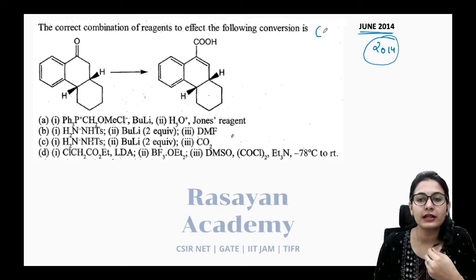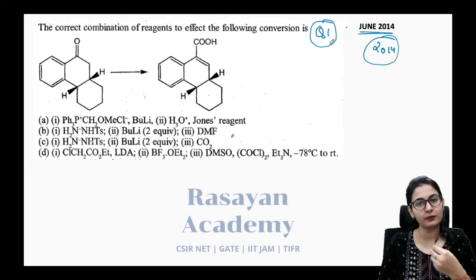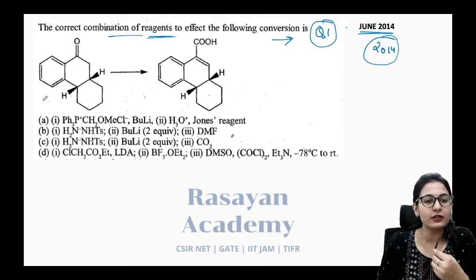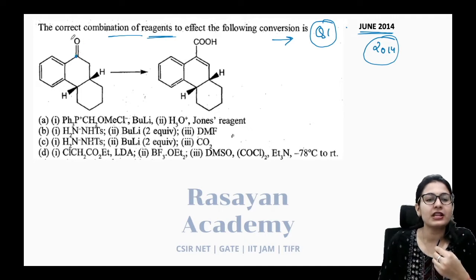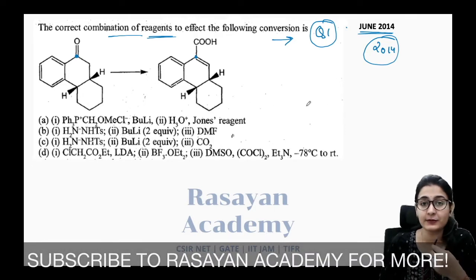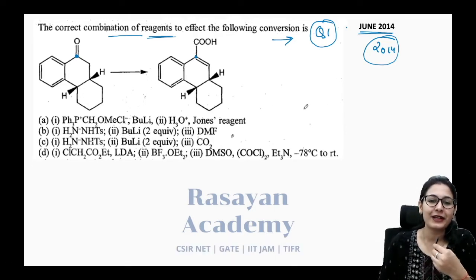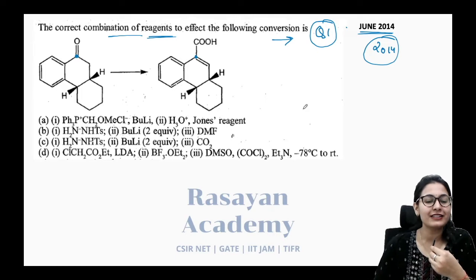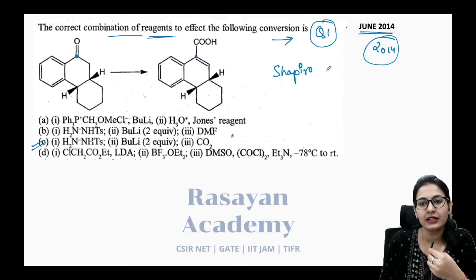Question number one: find the correct combination of reagents to affect the following conversion. Stop the video and try this question by yourself. The change in the molecule is that the ketone group is converted to an alkene, and on the same carbon you have a carboxylic acid. The answer is option C, and the name reaction is the Shapiro reaction.